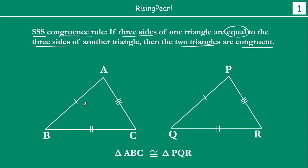So if one triangle's three corresponding sides are equal to their corresponding sides in the other triangle, then these two triangles are congruent — that is, triangle ABC is congruent to triangle PQR.